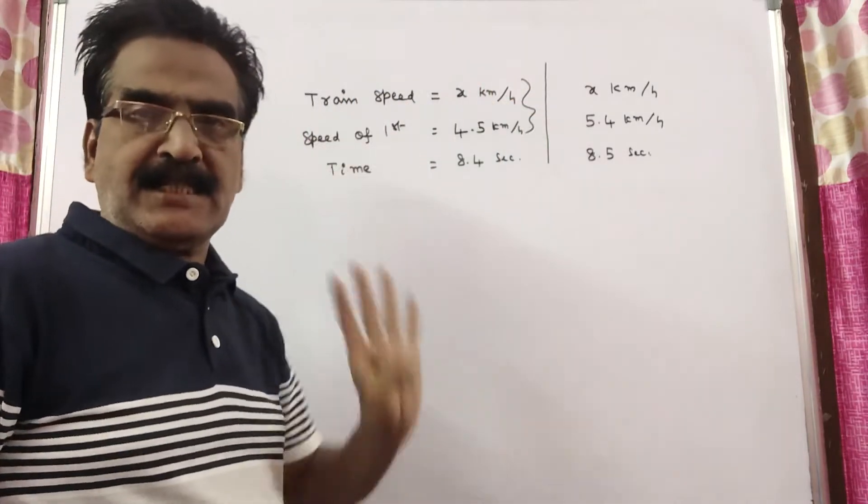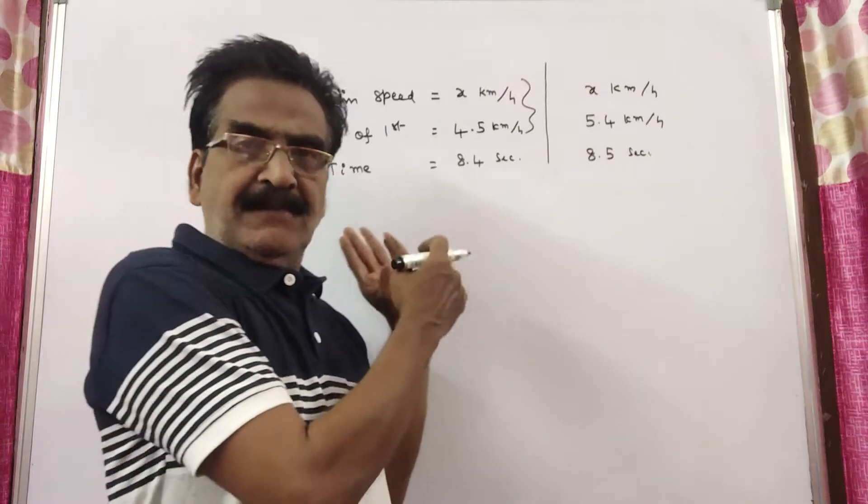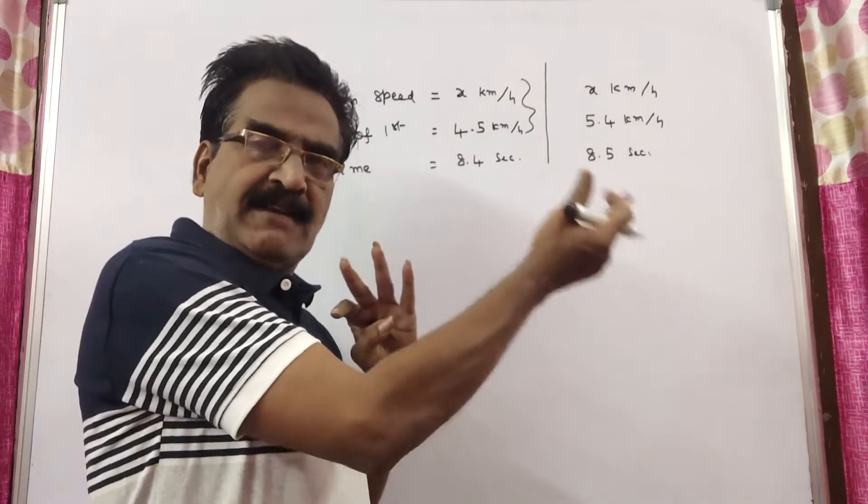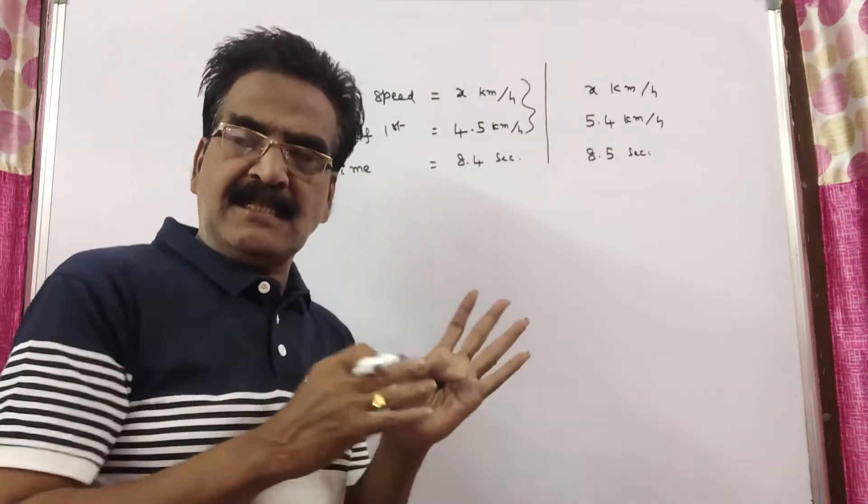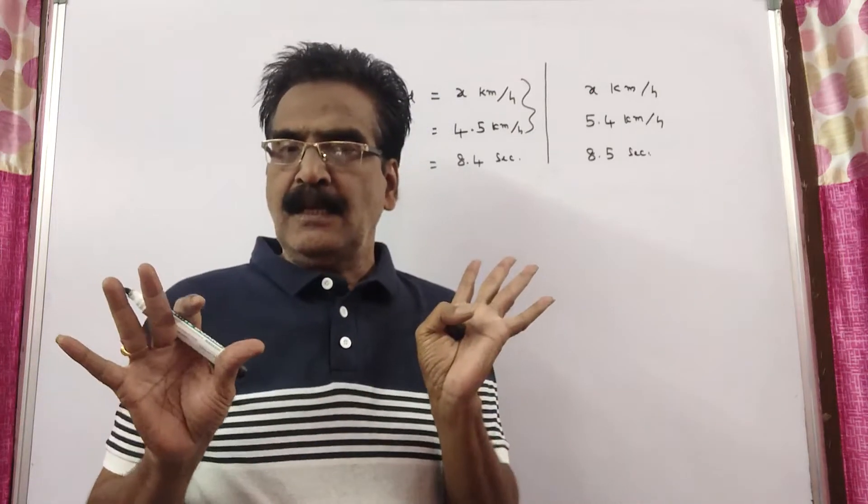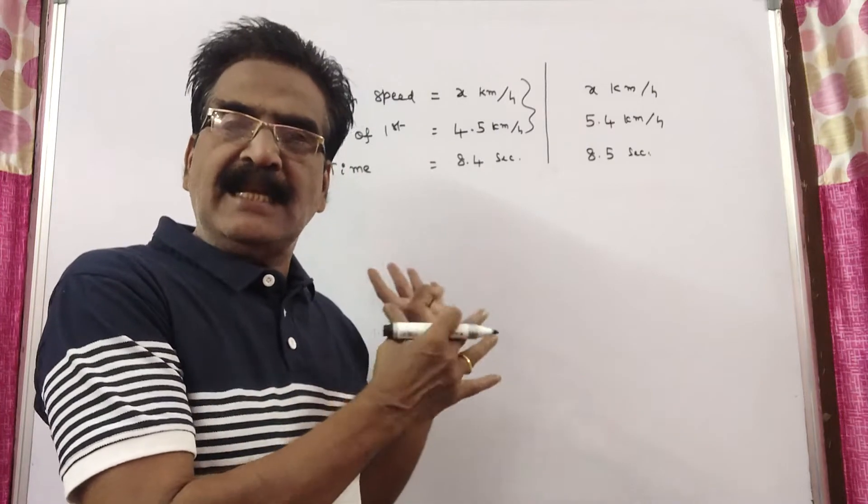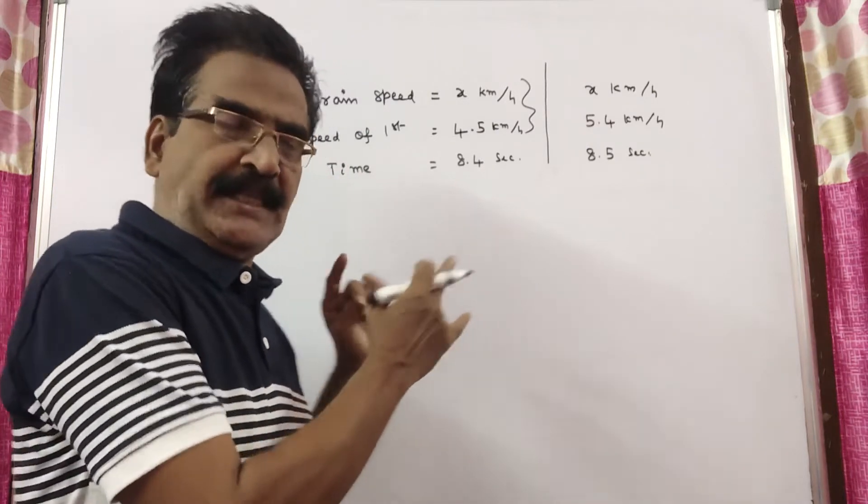It says speed of the train. Friends, in both the cases, while overtaking the first man and while overtaking the second man, the length of the train is same. Now, I am going to equate the lengths of the train in both the cases.